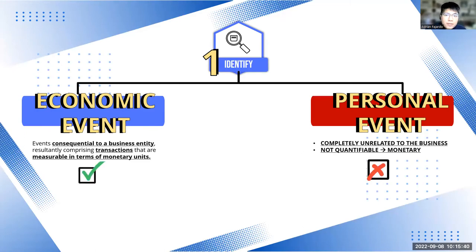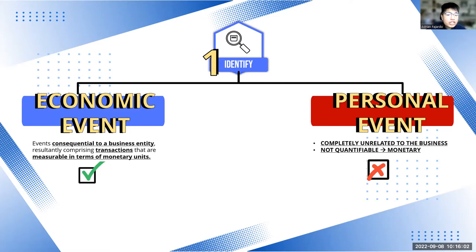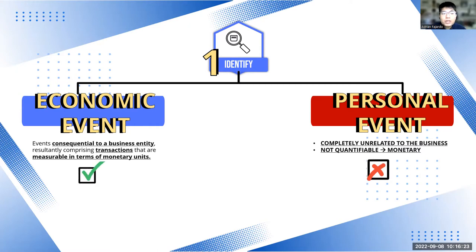Let's take a deep dive into the first step: identify. When it comes to businesses or corporations, there are many events happening, but in accounting we focus on economic events, in contrast to personal events. An economic event is one that is consequential to a business entity, usually comprising transactions, and must be measurable in monetary units. If it's consequential to the business and measurable in monetary units, that's what we call an economic event — and those are what we identify and record.